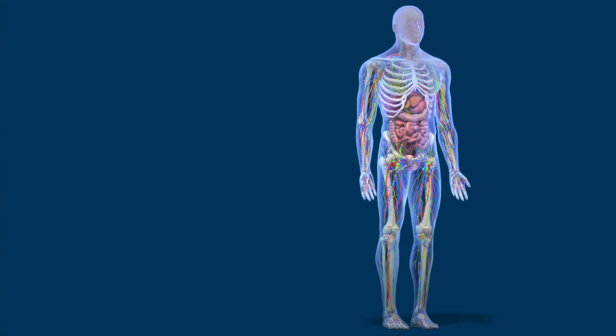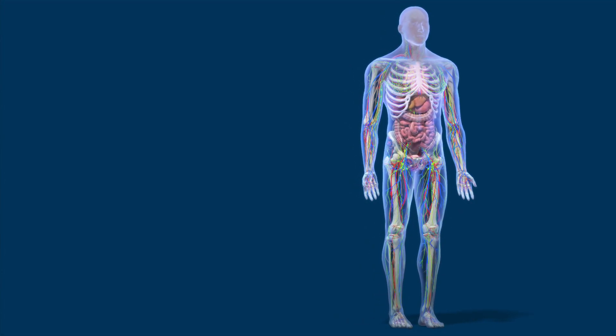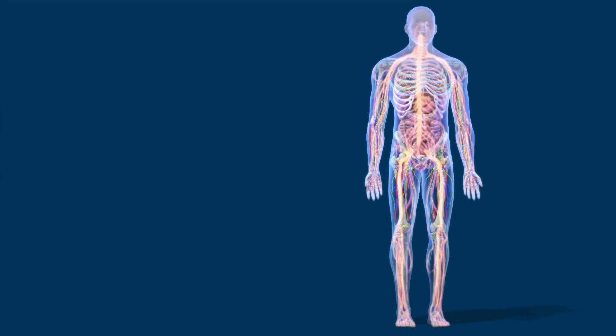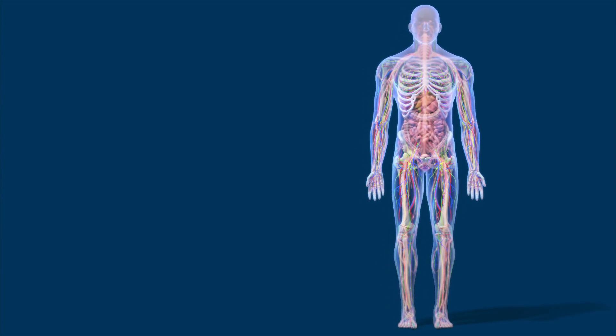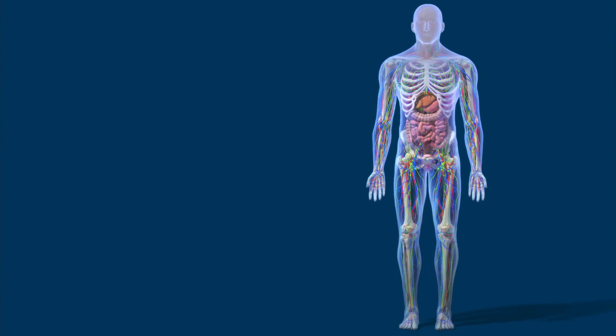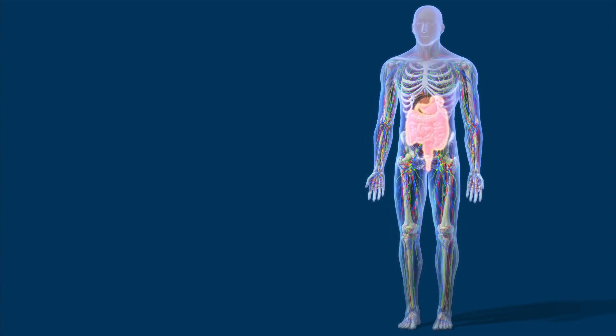TTR amyloid deposits are most commonly found in the heart, where they cause cardiomyopathy, and in the nervous system, where they cause neuropathy. Deposits can also be found in the digestive system and kidneys.